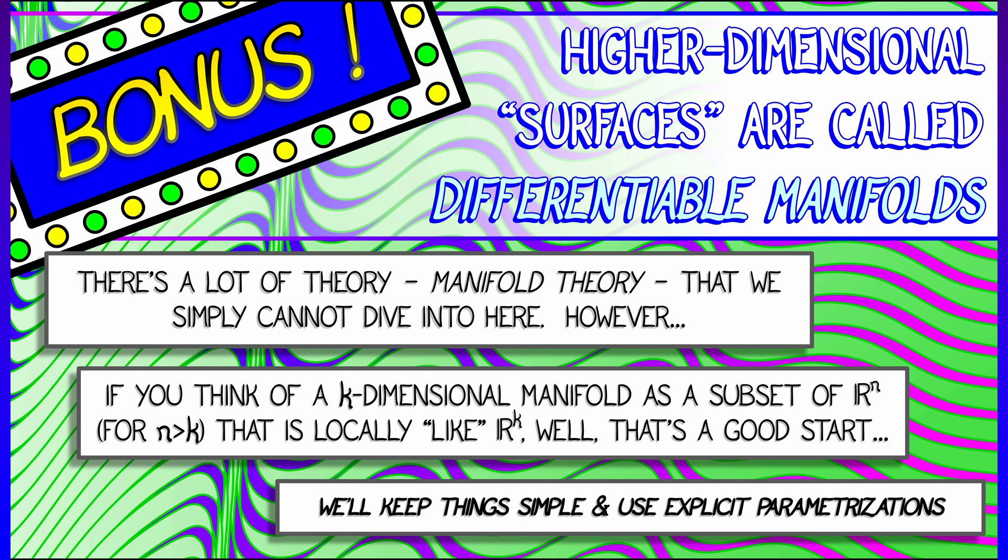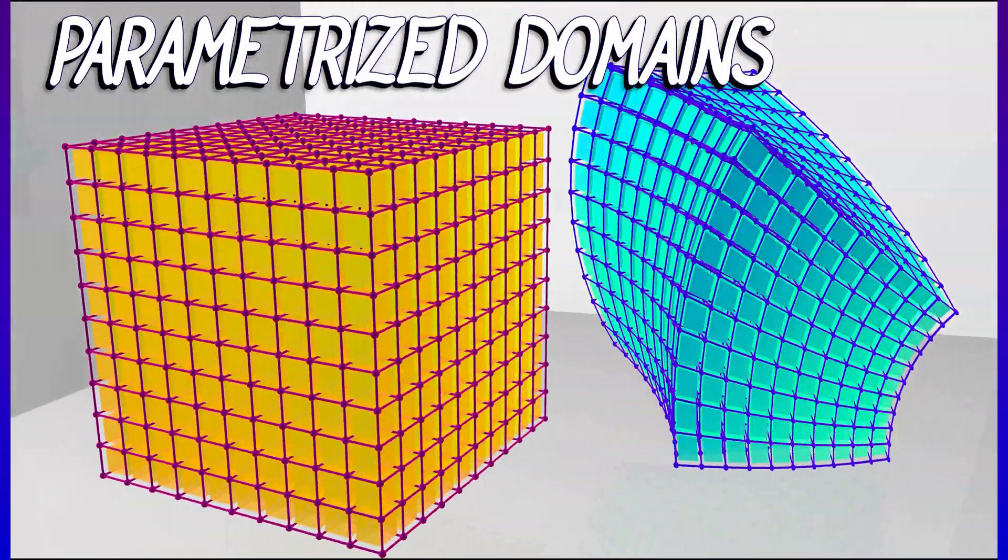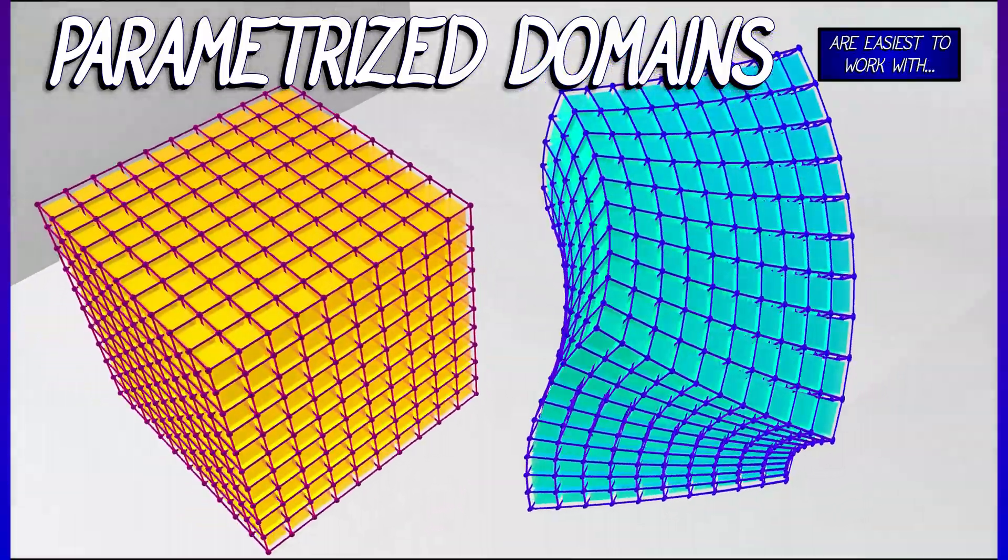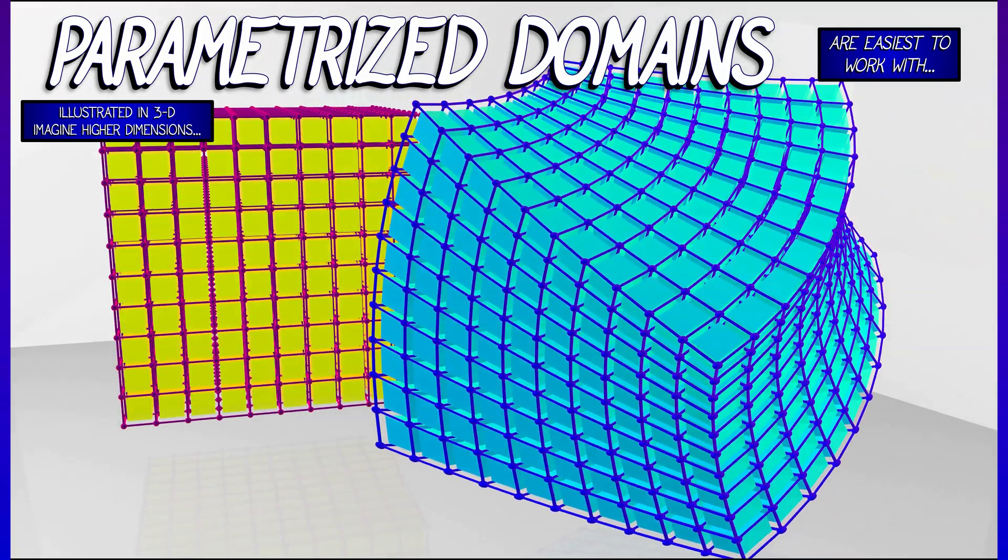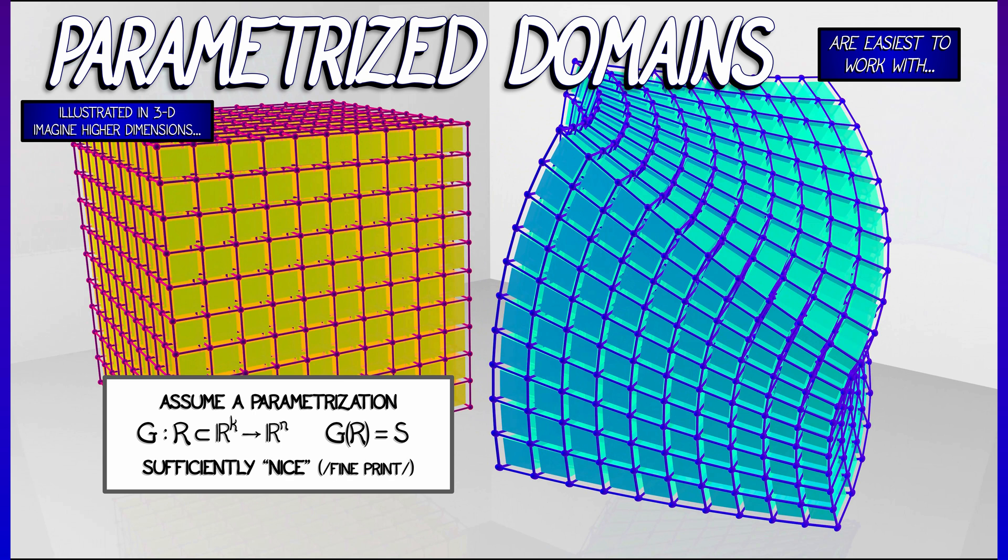We're going to keep things really simple by working with parametrized domains. We're going to think about working with functions from some region in R^k into R^n.